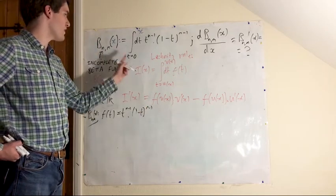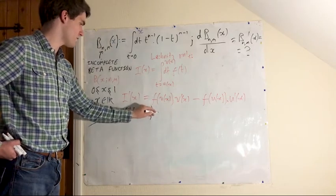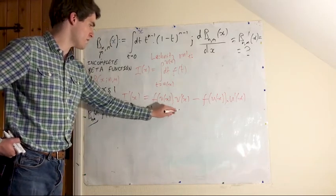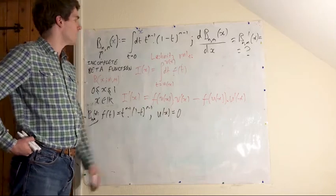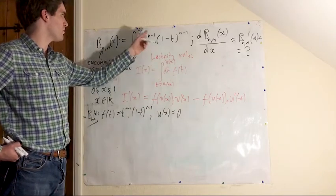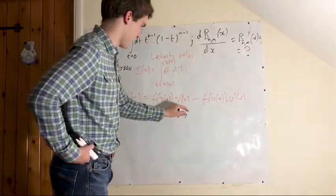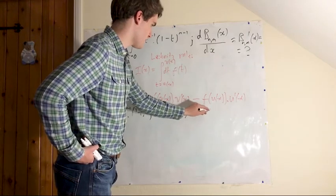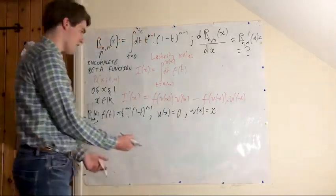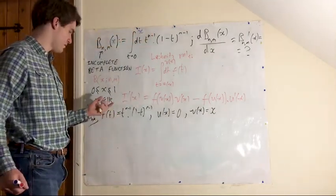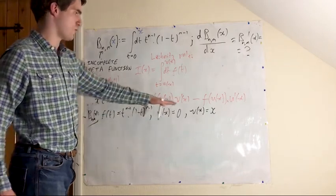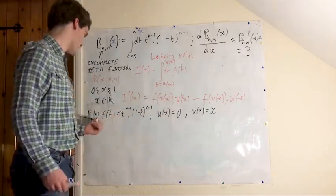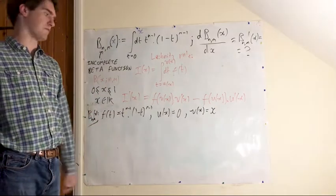My u of x is equal to 0 here, so my u of x is equal to 0, and my v of x, well, that's equal to x. Okay, now we're ready to substitute in all these things into this formula to finally find our derivative of the incomplete beta function.